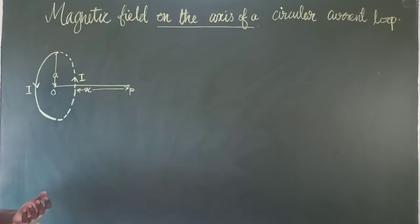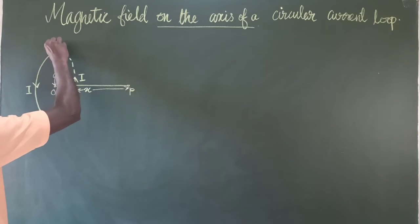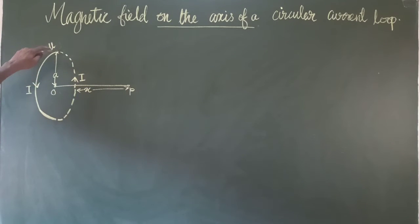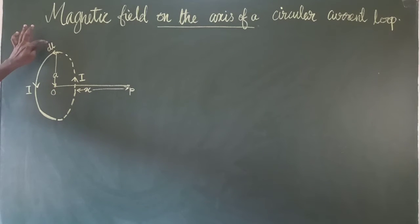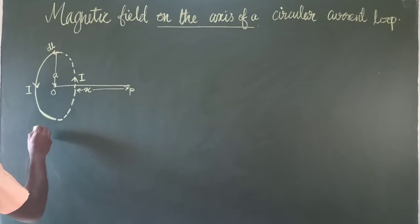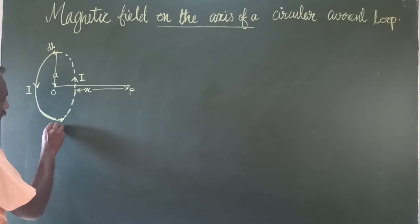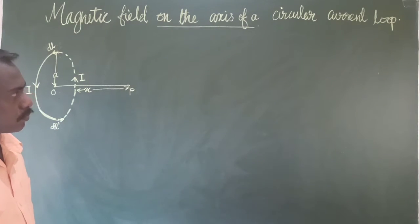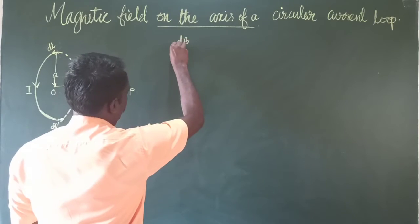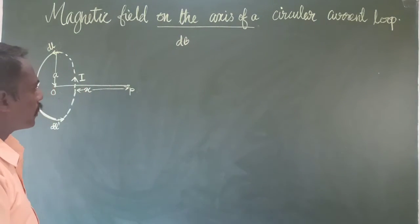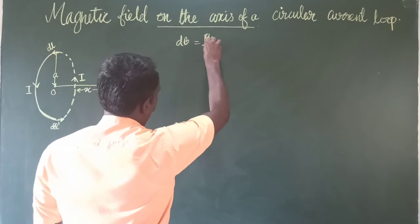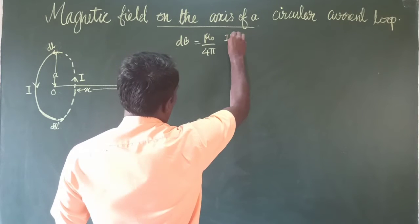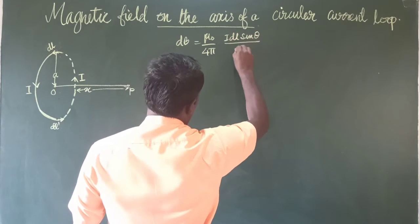To calculate the magnetic field produced at point P, we consider a current element DL — that is the current element I·DL — flowing in the anti-clockwise direction. According to the Biot-Savart law, the magnitude of the magnetic field produced by the current element DL is equal to (μ₀/4π) × I·DL·sinθ / R².